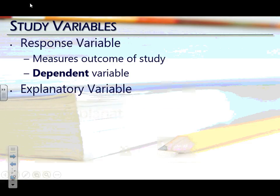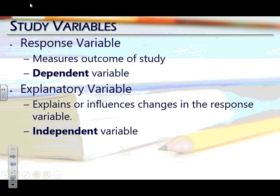The second variable is the explanatory variable. This is the one that we think might be having an effect on the other. Of the two variables we're looking at, which one is more likely to cause a change in the other? It's also known as the independent variable.